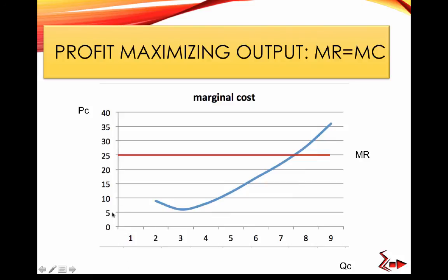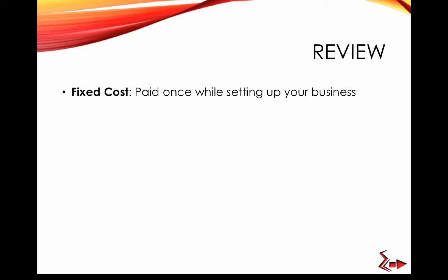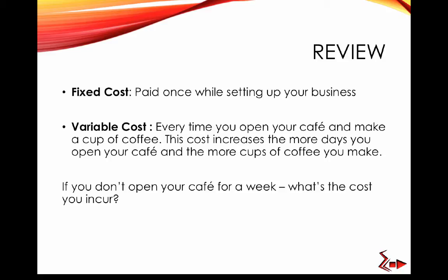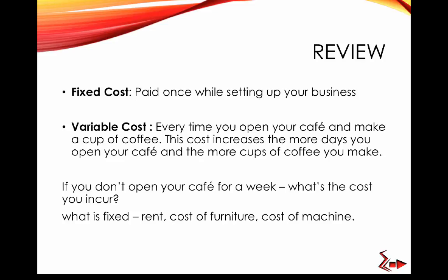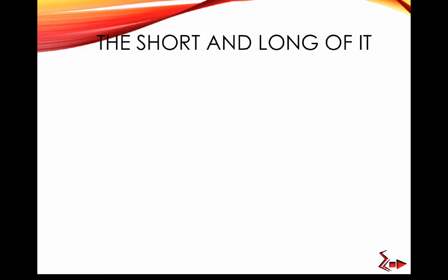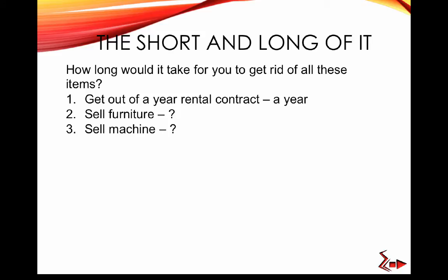Drawing the marginal cost curve against the horizontal marginal revenue line at $25, the firm produces where they intersect — approximately 7.5 units. Now, what's the difference between short run and long run? If you wanted to exit the business, you'd need to sell the furniture, sell the machine, and end the rental contract — which might take a year. That year is the long run; anything less — a week, a month, six months — is the short run. In the long run, nothing is fixed and you can fully exit.